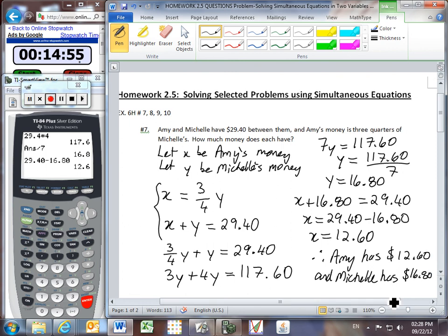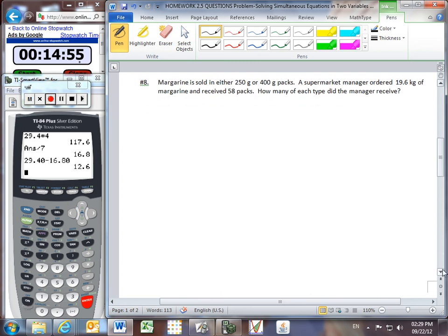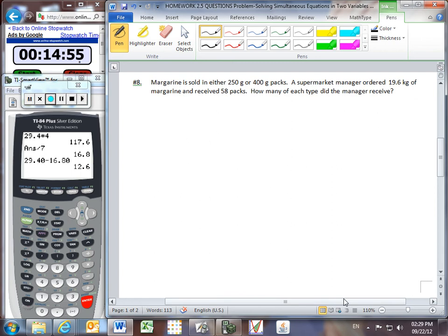Alright, let's go on to problem number eight. Margarine sold in 250 gram or 400 gram packs, and we need to know how many packs of each type the manager received. So let's define our variables. Let X be the number of 250 gram packs, and let Y be the number of 400 gram packs.